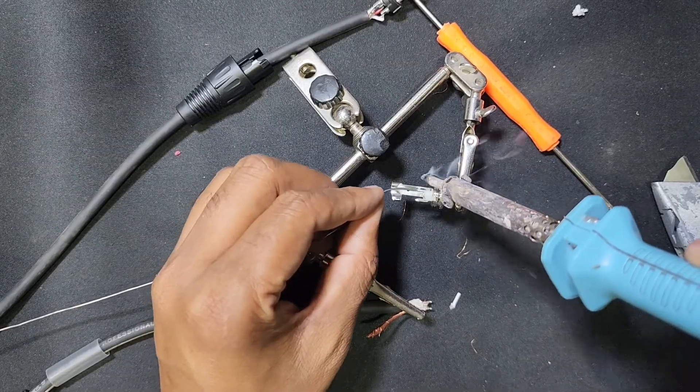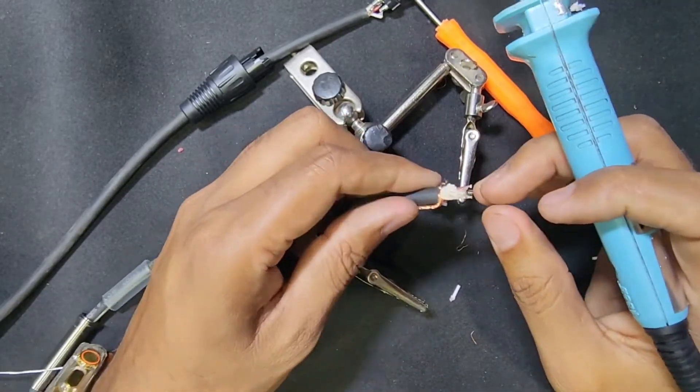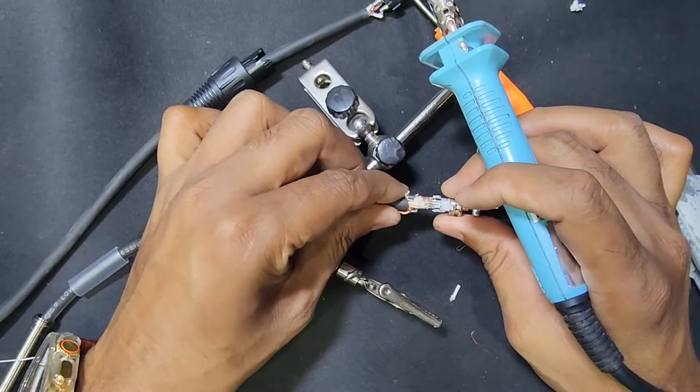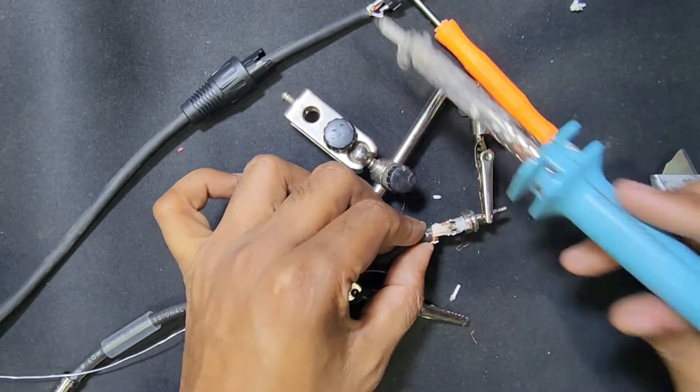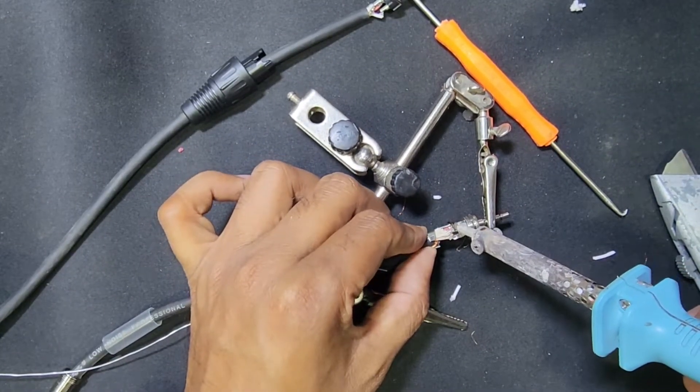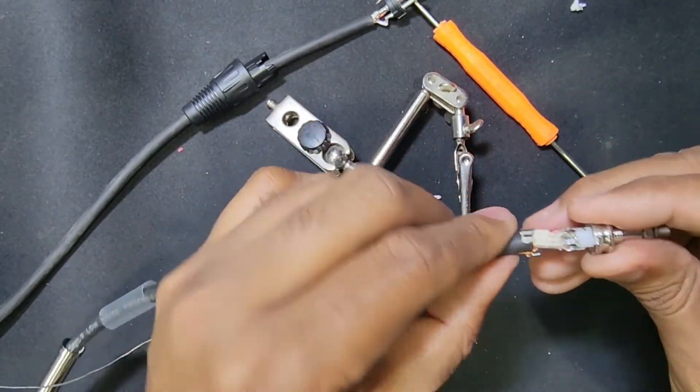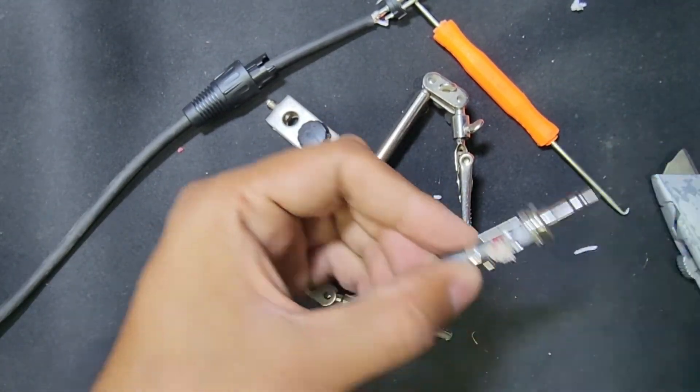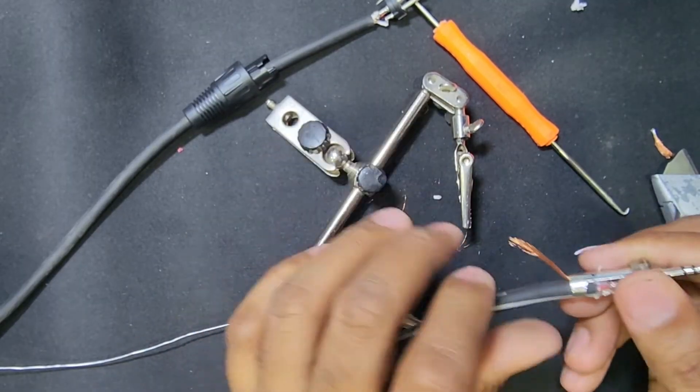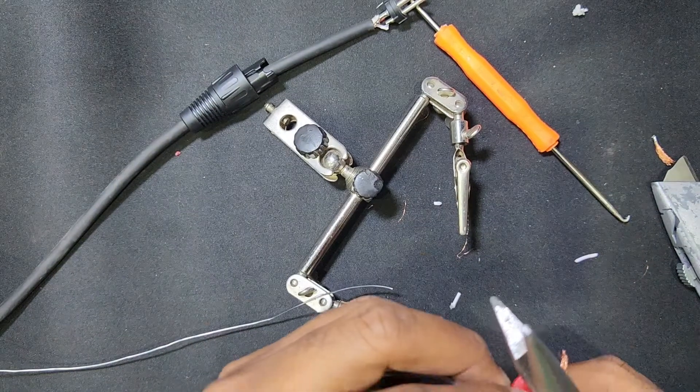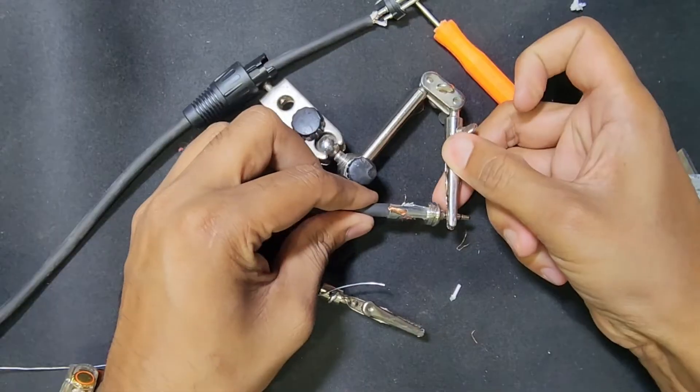I will connect the white one with the big one, and on that side the red one with the small one. Then connect the ground with the big one. After that, I'll make it tight and cut this extra cable for ground. Now I will solder this ground.